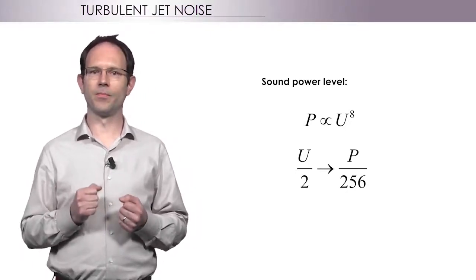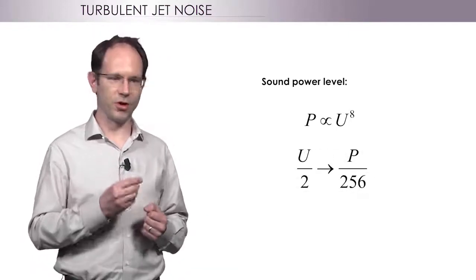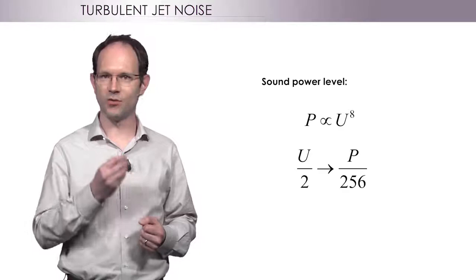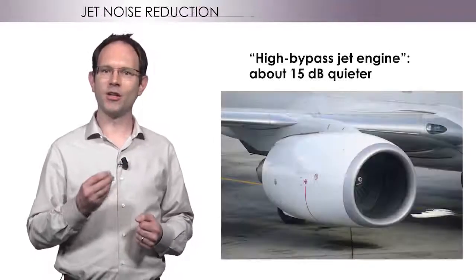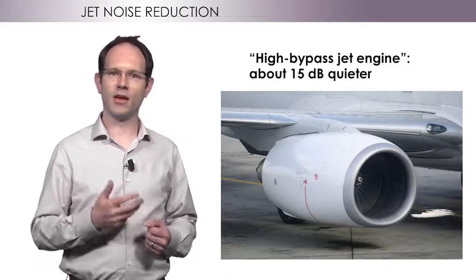In other words, if you reduce the jet velocity by a factor 2, the power of the noise is reduced by a factor 256. Modern jet engines operate at lower velocities than before and are therefore much quieter.